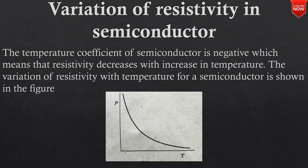Variation of resistivity in semiconductors: The temperature coefficient of a semiconductor is negative, which means that resistivity decreases with the increase in temperature. The variation of resistivity with temperature for a semiconductor is shown in the figure.